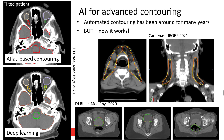We've had automatic contouring in treatment planning systems for many years. But our common experience is that we might apply those tools and often they wouldn't be quite right—we'd have to make edits, and sometimes we'd just delete them and start from scratch. So why is that, and why is it different now? Atlas-based contouring uses an atlas of previously contoured patients, deformably registered to your current patient to pull contours over. That was the state of the art until just a year or two ago. It works well under certain circumstances, but when your current patient's anatomy differs from the atlas, it fails.